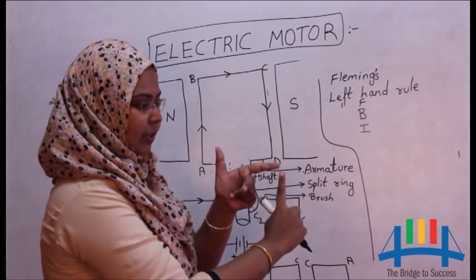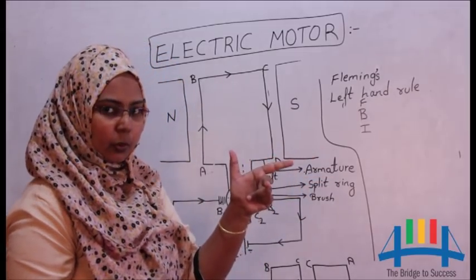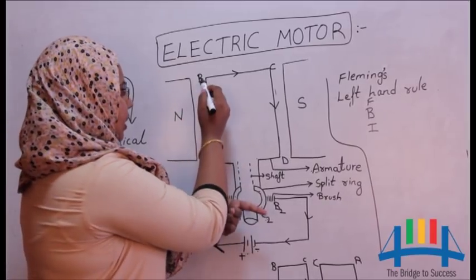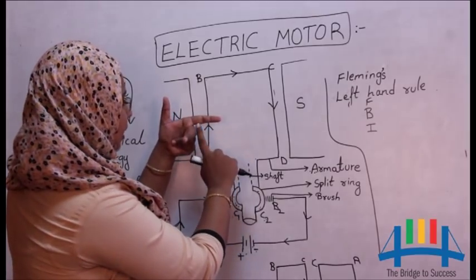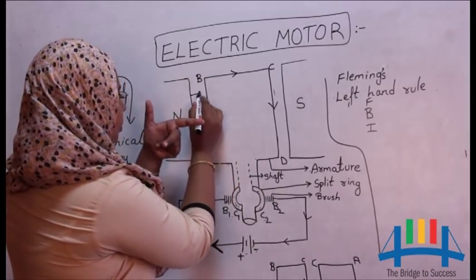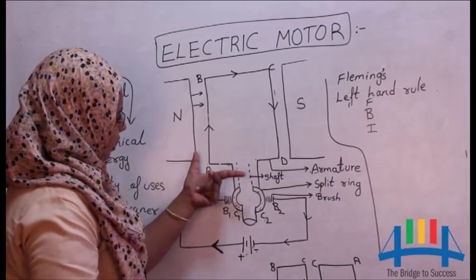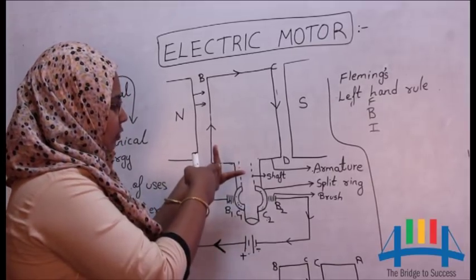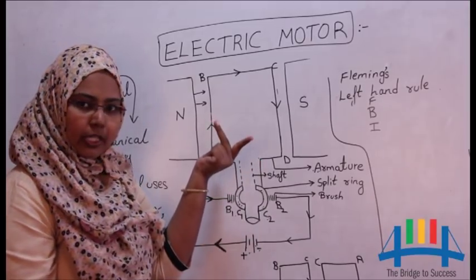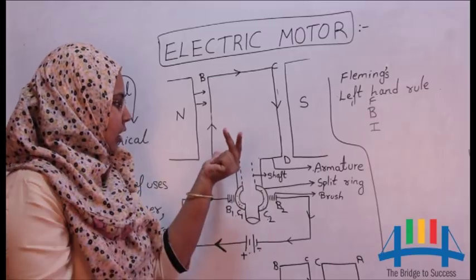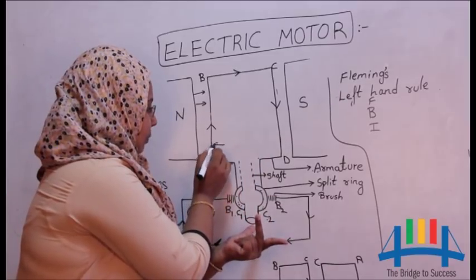When you apply this rule to the electric motor, you can see here, I am considering this arm AB and applying this rule. This is the direction of magnetic field from north to south pole. Current direction, you can see it is going upwards. So I just turn my hand like this to show you the direction of current which is going upwards. And thumb is going into the board. So the magnetic force is pushing this arm AB into the board.